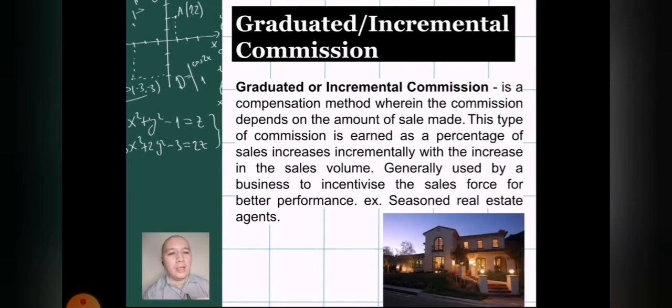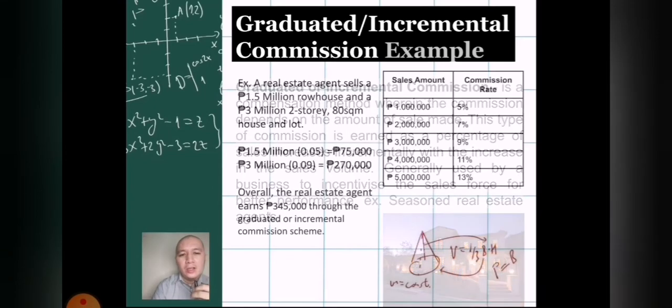Finally, we have the last example which is graduated/incremental commission. So what's the difference? Let's define it first. It is a compensation method wherein the commission depends on the amount of sale made. That's the keyword - it depends. This type of commission is earned as a percentage of sales that increases incrementally with the increase in the sales volume. So as the sales volume increases, the rate increases. I'll show you that later. Generally, it's used by a business to incentivize the sales force for better performance. Example: seasoned real estate agents - those who close large deals.